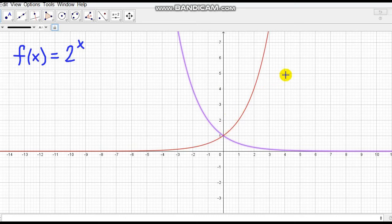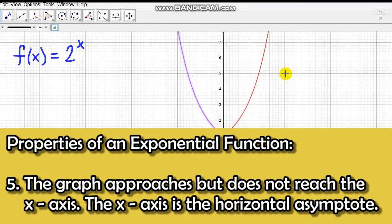And lastly, number 5, the graph approaches but does not reach the x-axis. The x-axis, as I mentioned earlier, is the horizontal asymptote.